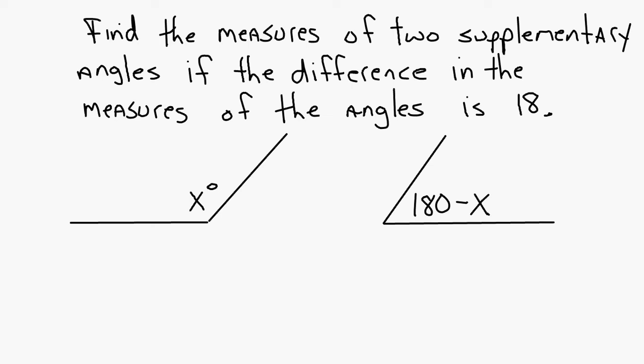Find the measures of two supplementary angles if the difference in the angle measures is 18. What does difference mean to do? Subtract. So the difference in these two angles, so 180 minus x, minus the other angle, which is x, has to equal 18. Right? The difference in the measures of the angles is 18.